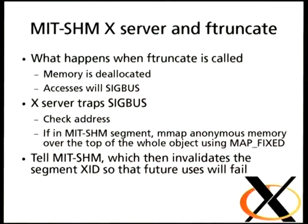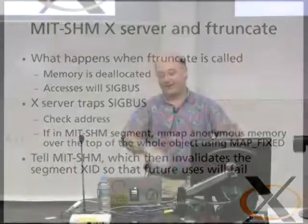Now you have passed this file descriptor off to the X server, and you share a file descriptor to the same piece of shared memory. What happens when the application calls ftruncate on the file? All those pages — whoof — they're gone, and every access to that address space will now generate a SIGBUS. So what do I have to do? The X server traps the SIGBUS, checks where the address was, has a little linked list to these shared memory blocks, invalidates that one, mmaps some new memory on top of that to return from the signal handler, and invalidates that XID so the next time the user tries to use that shared memory block, they get errors back.